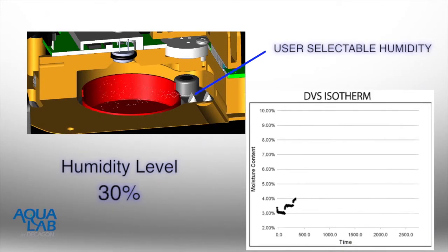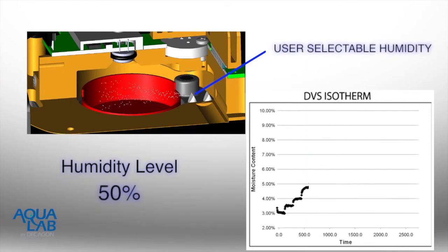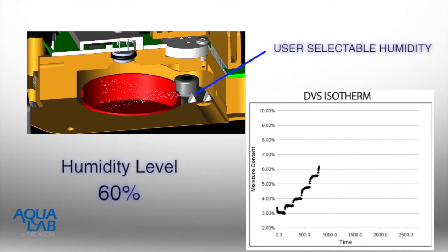The DVS method is actually a static or equilibrium sorption method, not a dynamic method. Dynamic refers to the way that the method dynamically changes from one humidity level to another.